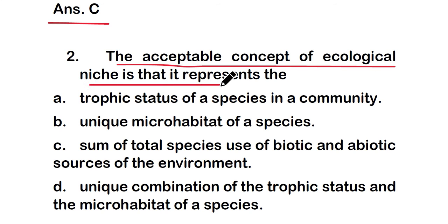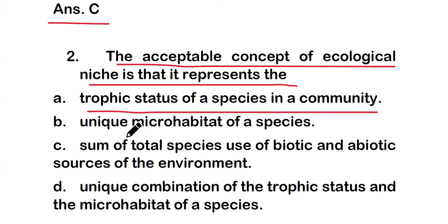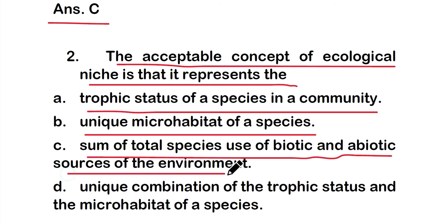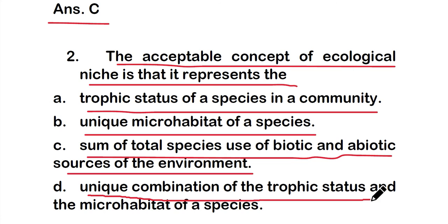Question two: An acceptable concept of ecological niche is that it represents — option A: trophic status of a species in a community; option B: unique micro-habitat of a species; option C: sum total of species use of biotic and abiotic sources of the environment; or option D: a unique combination of the trophic status and the micro-habitat of a species.